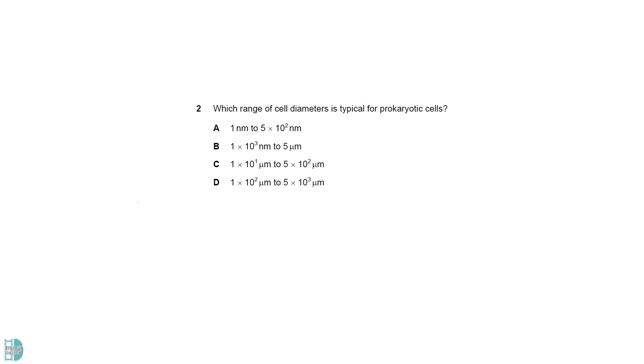Prokaryotic cells typically range in diameter from 0.1 to 5 micrometers. A is too small, while C and D are too large.